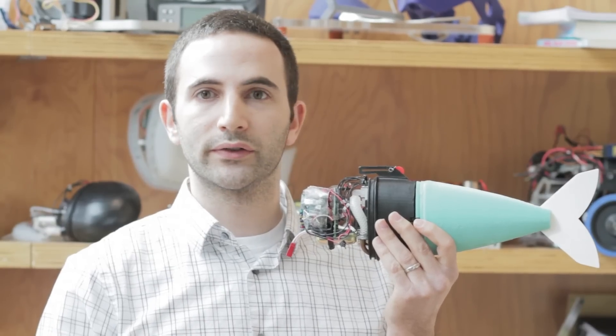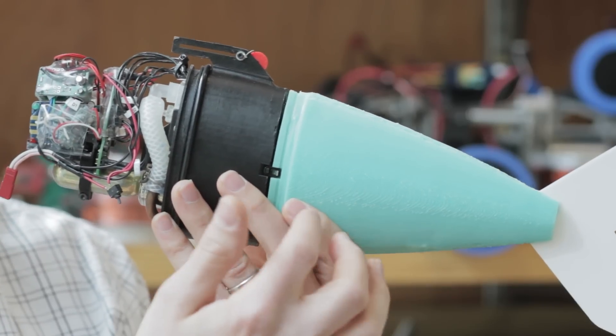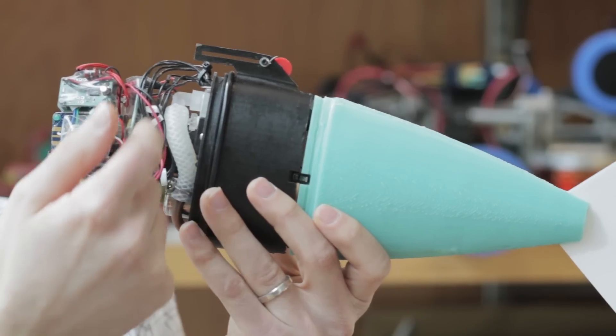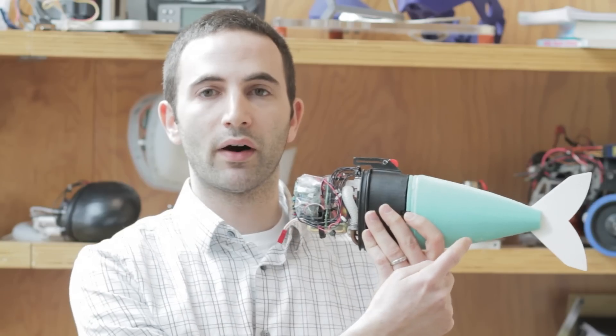This is our soft robot fish. Like we said, it has a soft body here in green and the supporting hardware up front. And the way this fish works is it stores fluid on board in the form of a gas, and then releases this gas through a series of pipes and valves into the body.